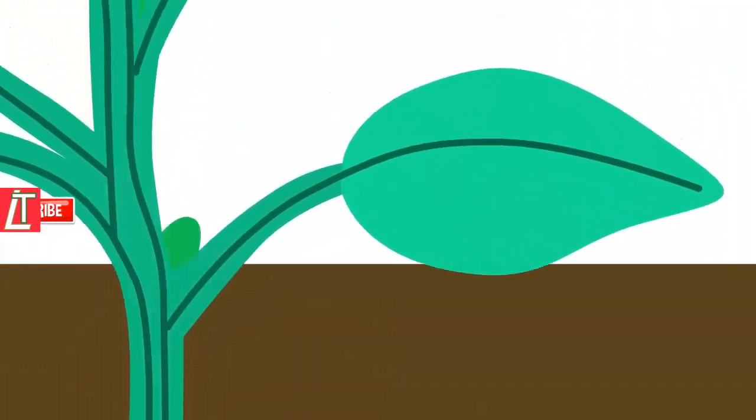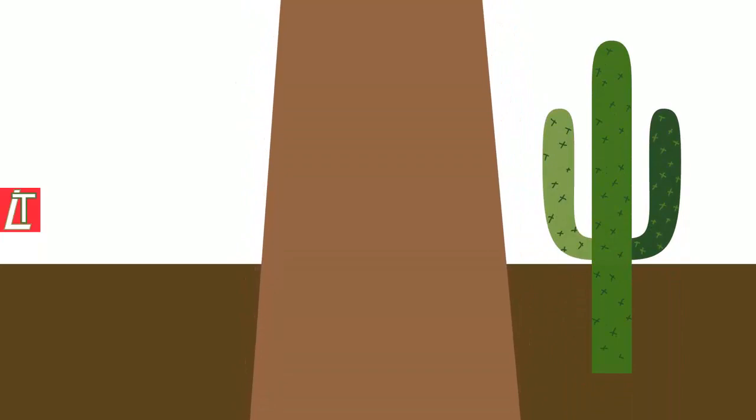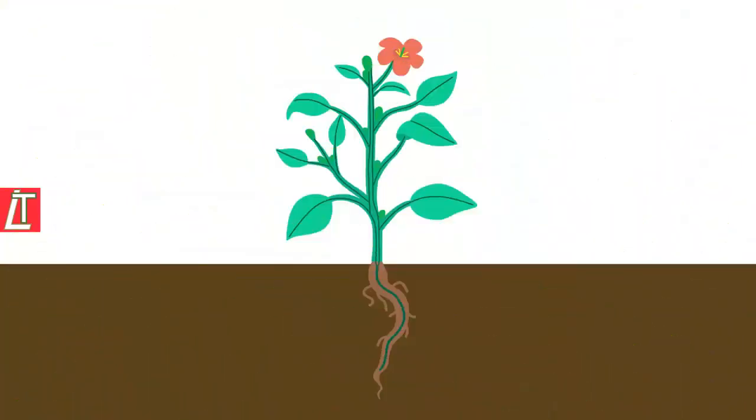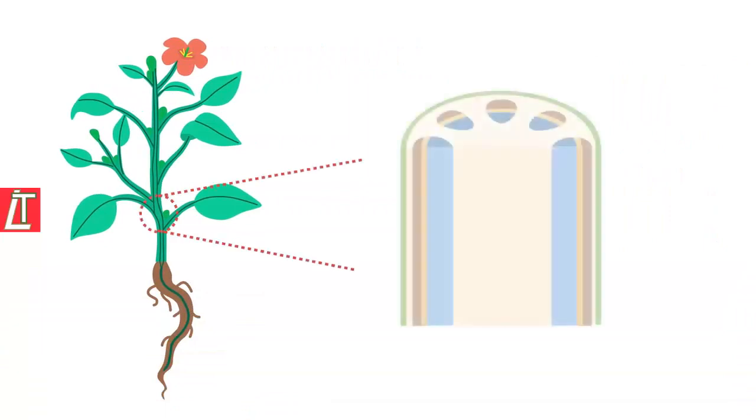The next part we will look at is the stem. The stem can vary greatly in size and shape. Think of the difference between a cactus and a tree trunk. This part supports the above ground parts of the plant and it is through the stem that substances are moved to where they are needed.